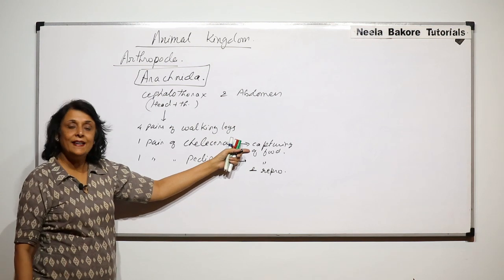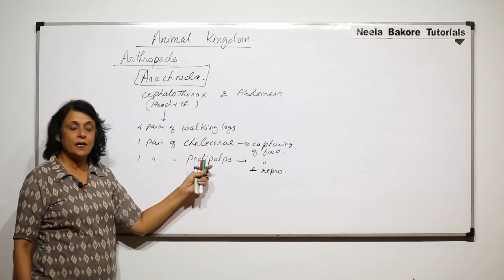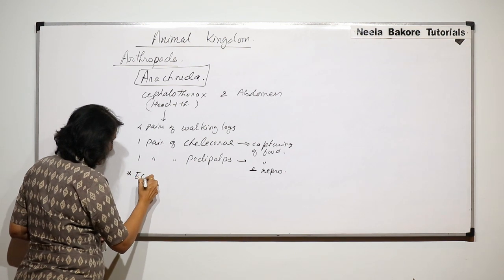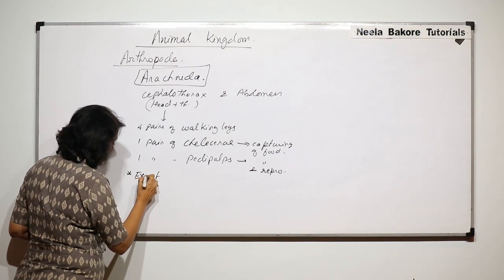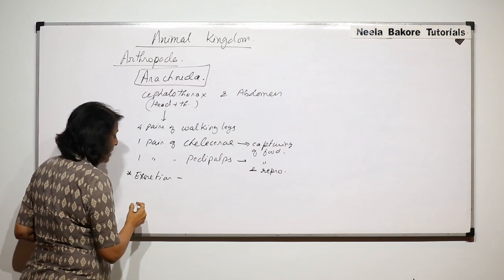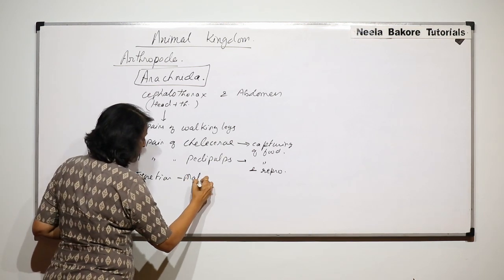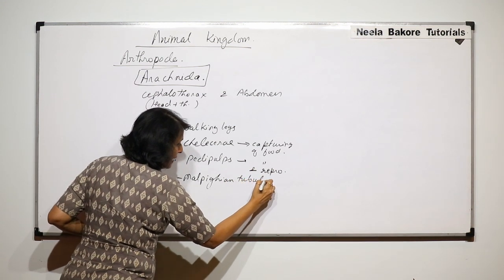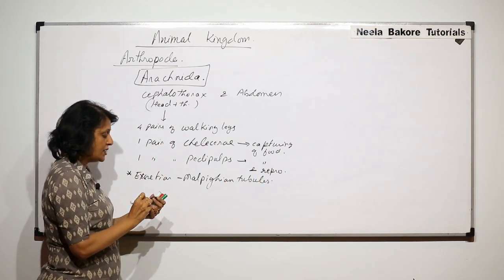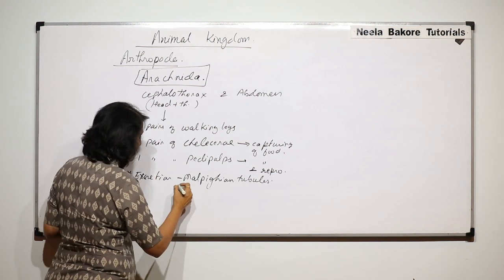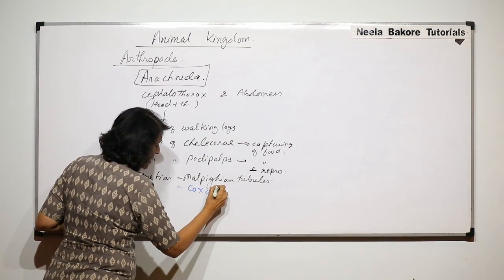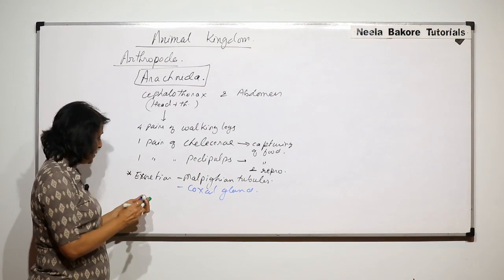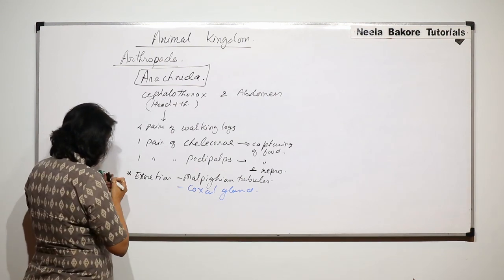For excretion, they have Malpighian tubules and a special type of gland called the coxal gland. These are the structures which help in excretion.